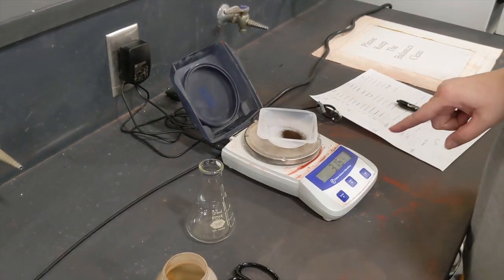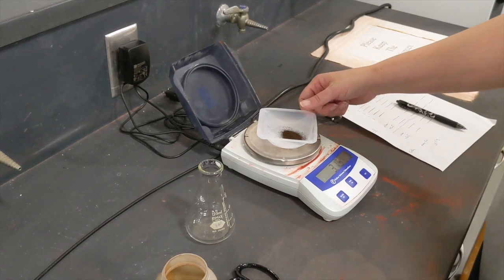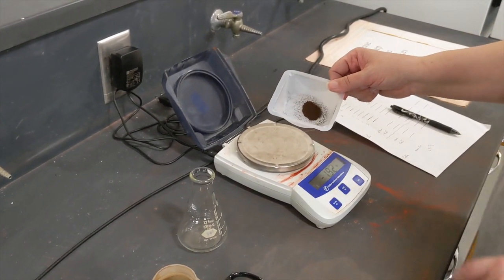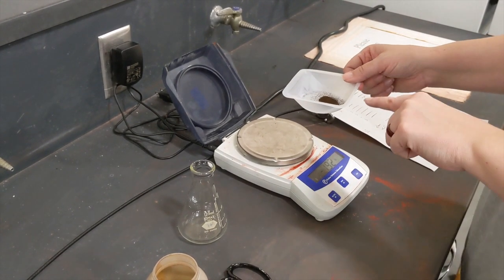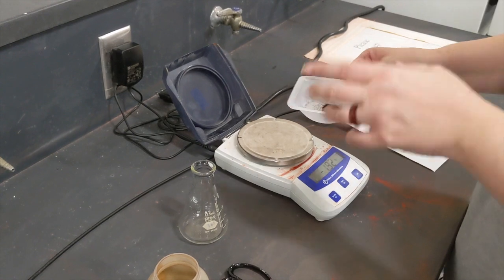Now I'm not writing this number down because here's the thing. This powder is pretty fine and when I transfer it into the Erlenmeyer flask, a little is going to be left behind. I don't want to know how much is in this dish. I want to know how much is in the Erlenmeyer flask.